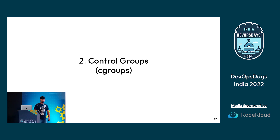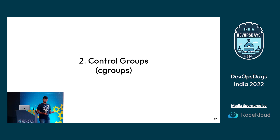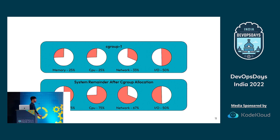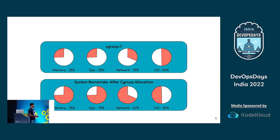The second building block is control groups, or cgroups. We want our containers to not use more than a certain amount of memory or CPU — we want to restrict that, and that's what cgroups are. It's another kernel feature that helps limit resource usage. In the diagram, suppose everything is 100%. I create a cgroup named 1 and allocate certain memory, CPU, network, and I/O. After creating cgroup 1, the remaining percentage can be used by system processes or other cgroups. To summarize: namespaces control what you can see, and control groups control what you can use.